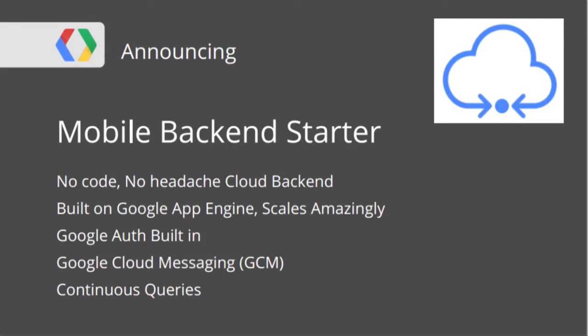The other topic is the Mobile Backend Starter. We're going to deep dive into its features — it's a set of APIs and services in App Engine that will help you do things like authentication, messaging, push from the cloud, and continuous queries. It will help you be more productive and focus more on your app rather than on the technical underground.